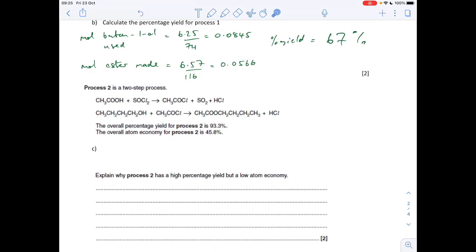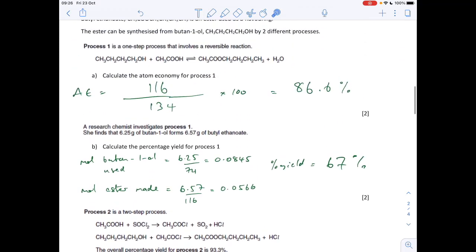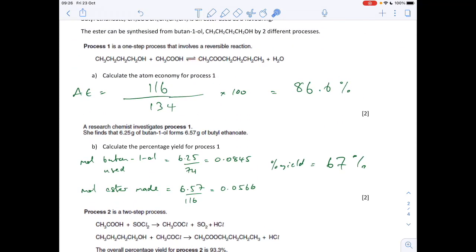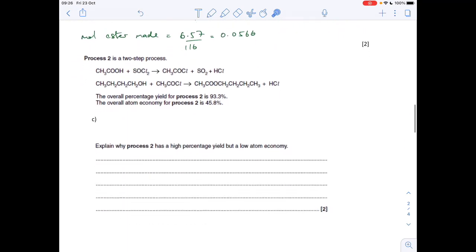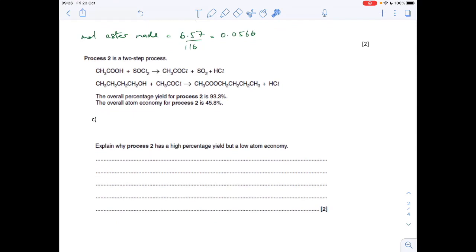So part C, we've told about process two. Two step process. We've got the equations there. Overall percentage yield 93.3%, so very high. Atom economy process two, 45.8%, so quite low. Got to explain those. So why have we got a high percentage yield? It's because the reactions aren't reversible. You'll notice in process one, we had a reversible reaction. And that's going to drop the percentage yield. Whereas obviously in process two, these are all one direction reactions. And so you get a higher percentage yield.